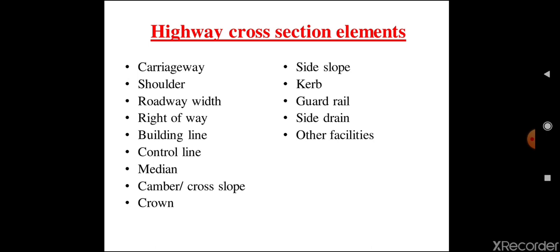Next, let us see the parts that come in the construction of a highway — highway cross-section elements. The elements are: carriageway, shoulder, roadway width, right of way, building line, control line, median, camber or cross slope, crown, side slope, curb, guard rail, side drain, and other facilities. If we want to construct a highway, all these elements need to be provided.